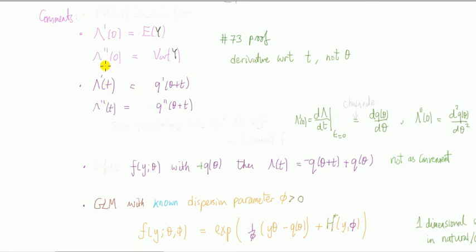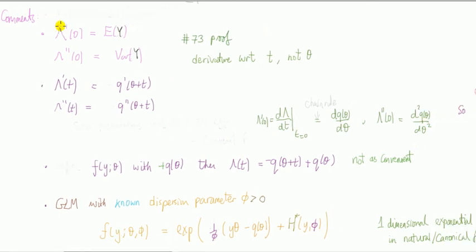Likewise, for the second cumulant: second derivative first, and then set t to zero. That gives me this. So the variance is the same as saying the second derivative of q with respect to theta. Notice that working with the CGF and doing the derivative with respect to t is the same as working with q and doing the derivative with respect to theta.